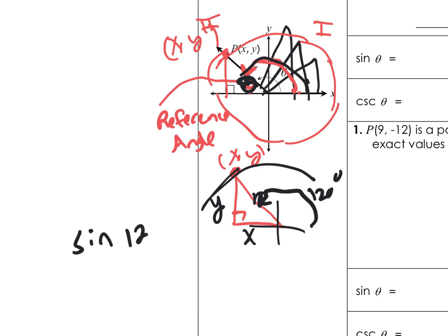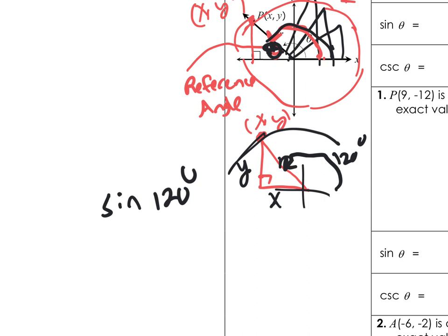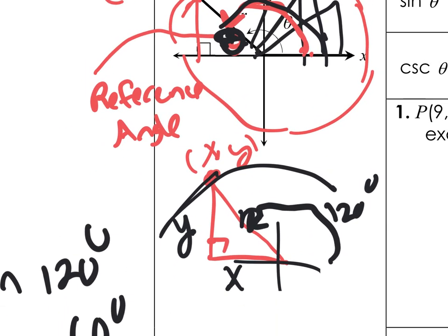If I want to find the sine of a 120-degree angle, it's going to be related to the sine of 60 degrees. How do I know? There are 180 degrees all the way across — if this is already 120, then this remaining piece must be 60. So what I do is use the 60-degree reference angle in my work. But be careful: the x could be negative, and it is negative there. The y up here is positive because it goes up — you just have to pay attention to your positives and negatives.